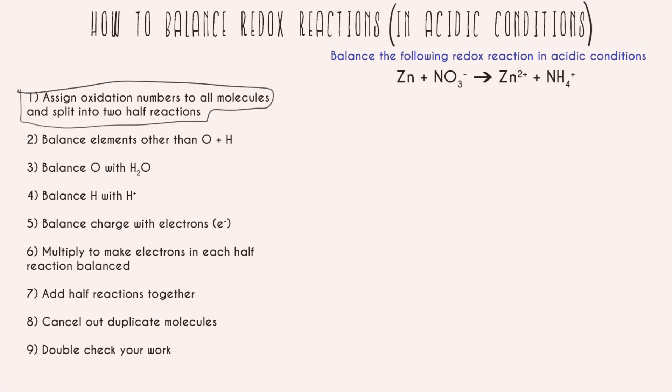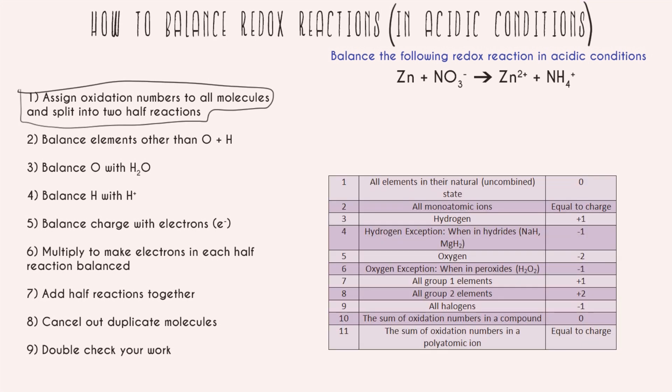So step number one: assign oxidation numbers to all molecules and split into two half reactions. Our rules for assigning oxidation numbers are right here, so let's go ahead and assign every element in all of our molecules their correct oxidation number. Our neutral zinc atom is following rule number one which says that all elements in their natural state have an oxidation number of zero.